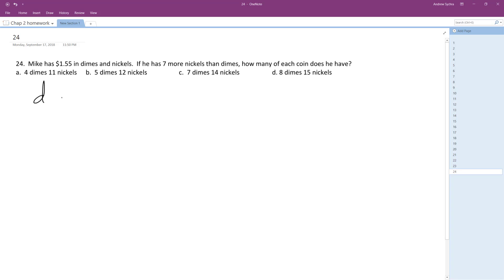So number of dimes... he has seven more nickels than dimes. So however many dimes there are, d plus seven equals the number of nickels he has. So if we have 0.1 or 10 cents times the number of dimes plus 0.05 or nickel value times the number of nickels is equal to $1.55.